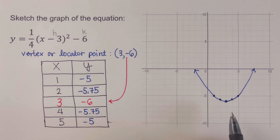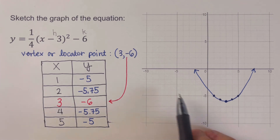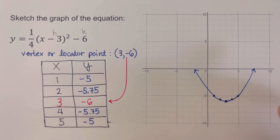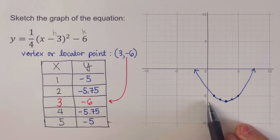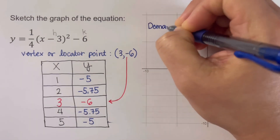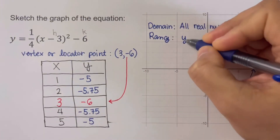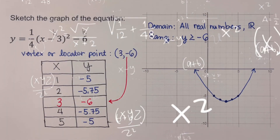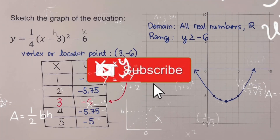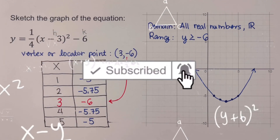Looking at this graph, the domain is all real numbers, since it extends infinitely to the left and right. The range is y greater than or equal to negative six, because the vertex is the minimum point. Did you get the same answers? If you find this video helpful, hit like and subscribe for more math videos — see ya!